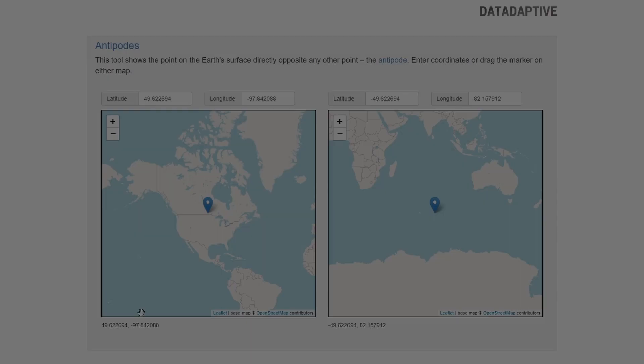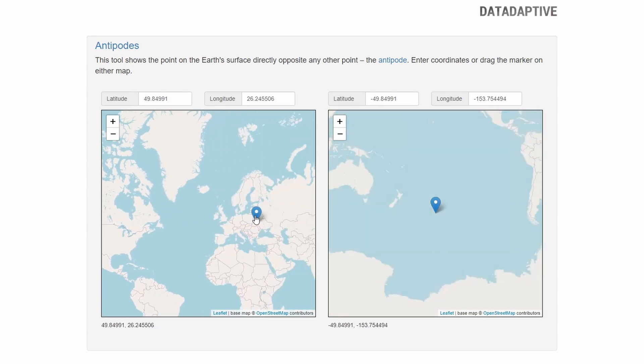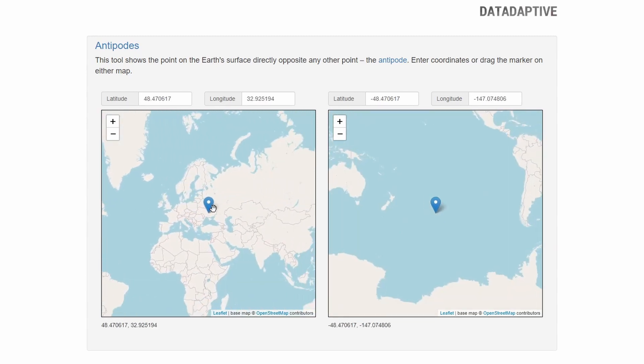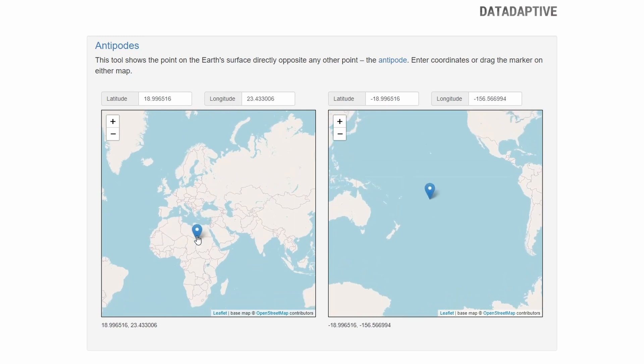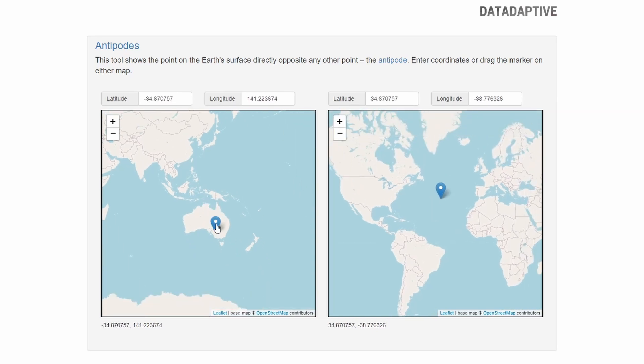It also explains why the point opposite to almost any point of land on the Earth, Antipodes, is water. All the edges are opposite from the tetrahedron's faces, and the faces are depressions caused by the collapsing crust, so the water all settles there, making the oceans.